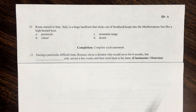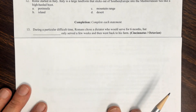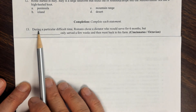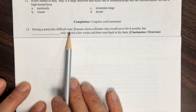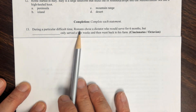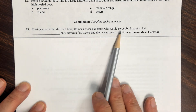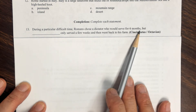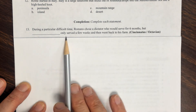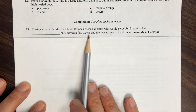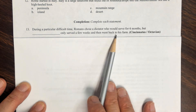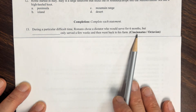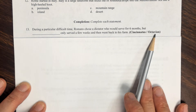Number thirteen: During a particularly difficult time, Romans chose a dictator who would serve for six months, but blank only served a few weeks and then went back to his farm. Who was that — Cincinnatus or Octavian?